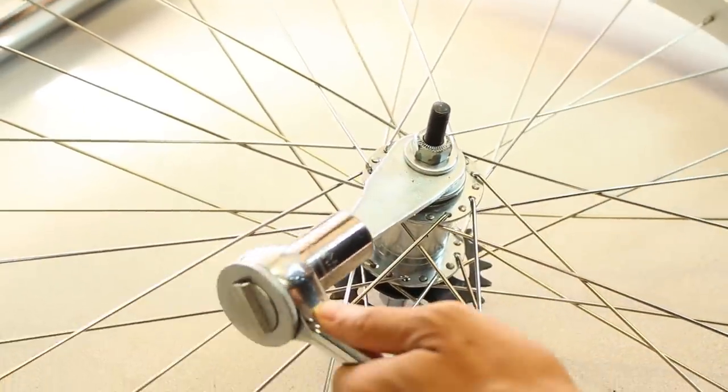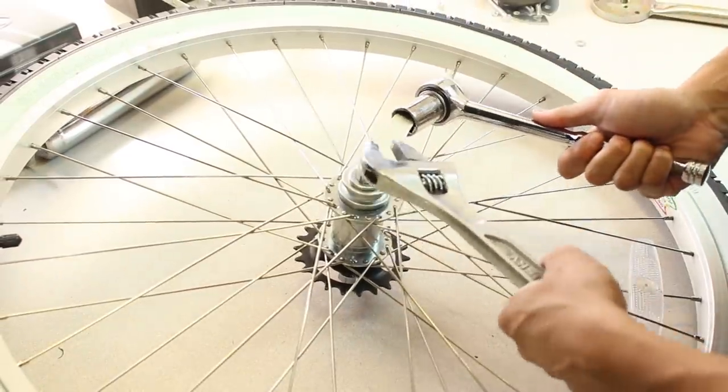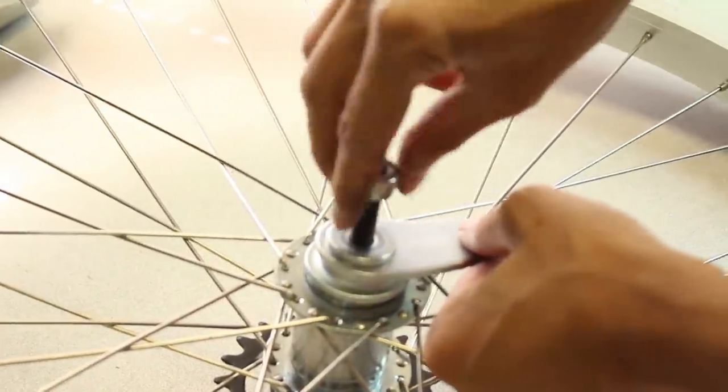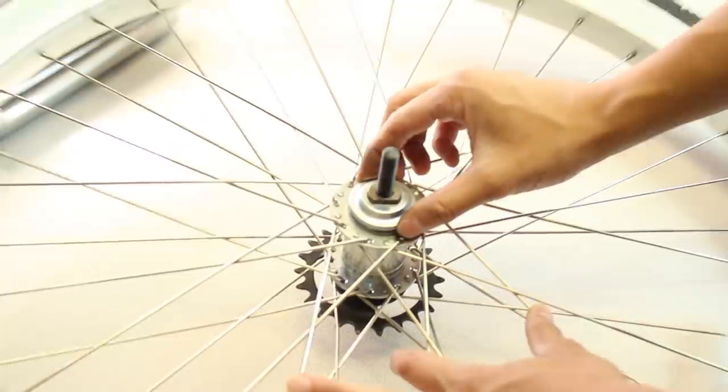We have to remove the coaster brake from the spoke hub. Use some leverage with a socket wrench and a crescent wrench to help break loose the nut. Take off the dust cap as well.